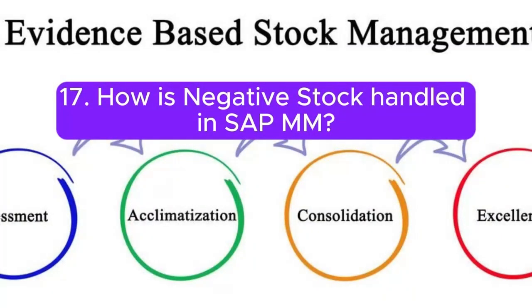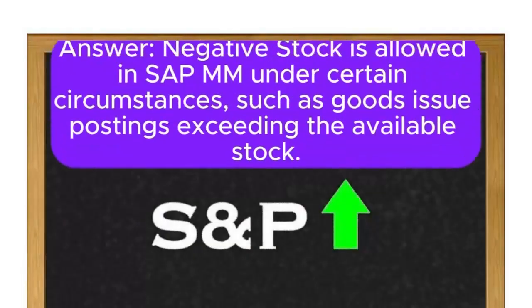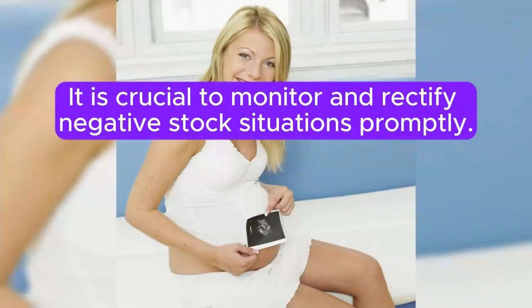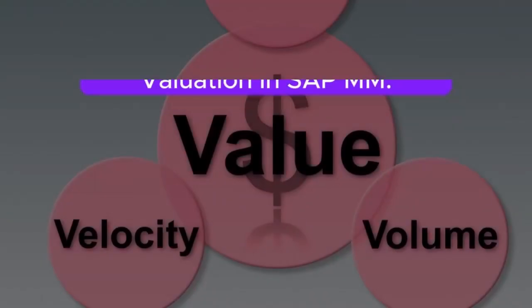Question 17: How is negative stock handled in SAP MM? Answer: Negative stock is allowed in SAP MM under certain circumstances, such as goods issue postings exceeding the available stock. It is crucial to monitor and rectify negative stock situations promptly.